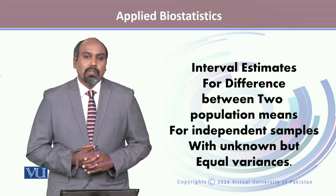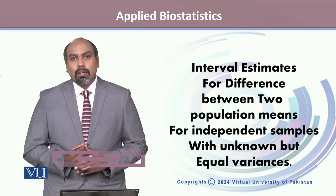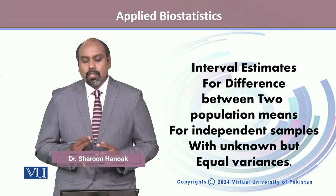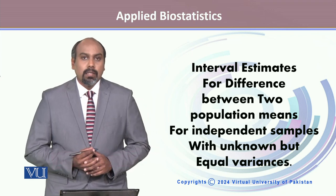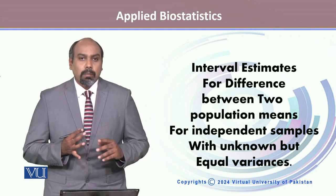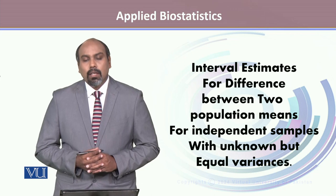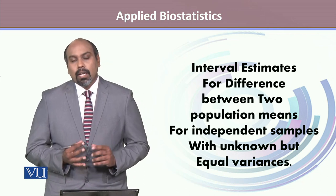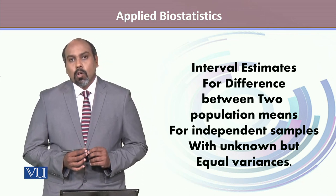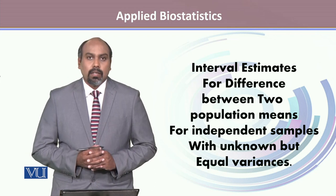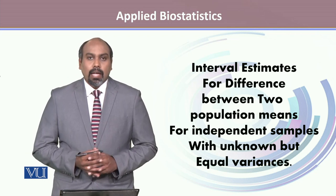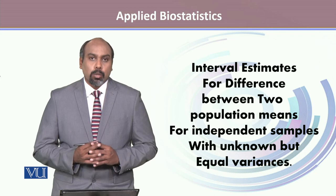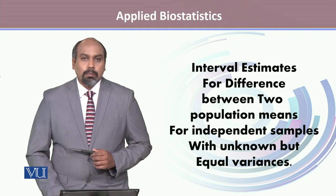In this module we will talk about confidence interval estimates for the difference between two population means, but we are talking about a special case where our samples are independent with unknown population variances, and we assume that these population variances, though unknown, are equal.